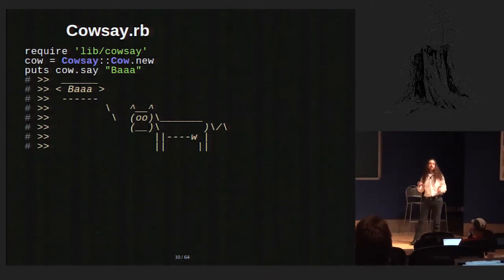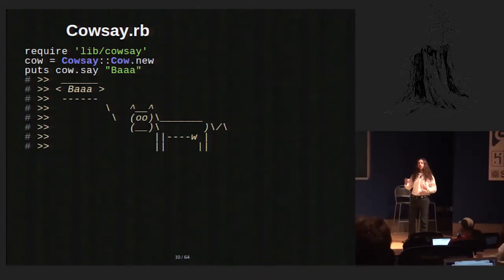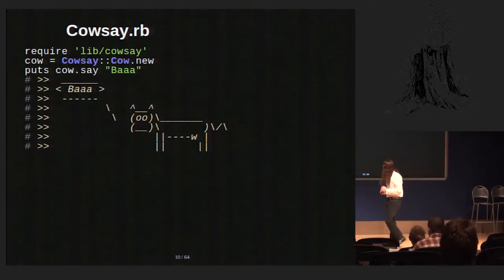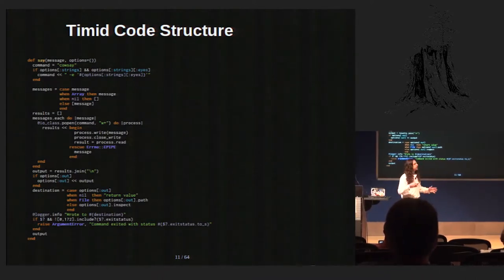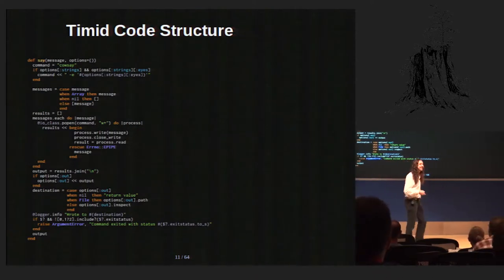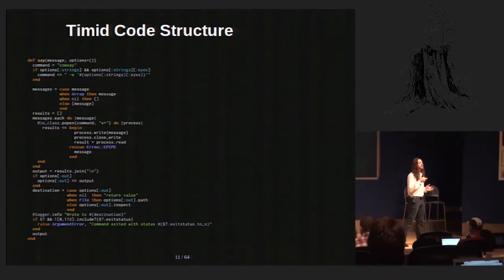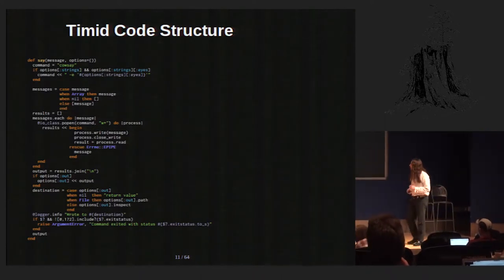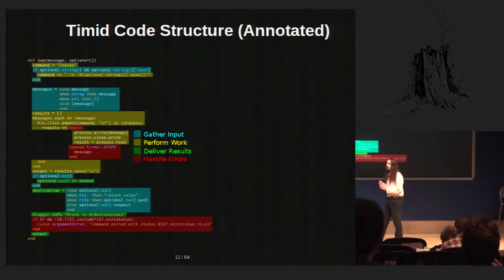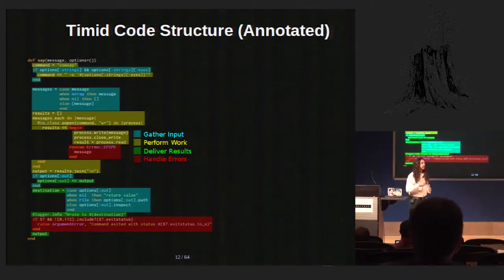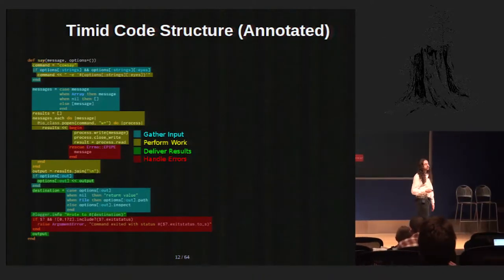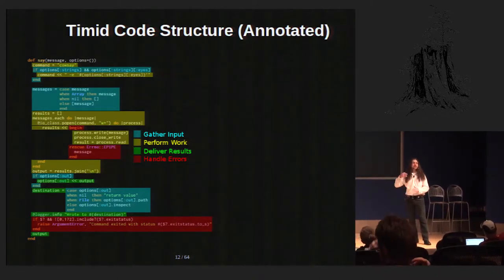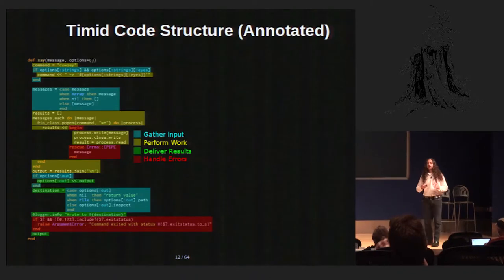Here's a basic example of how cowsay.rb works. It's just a thin wrapper where you instantiate a cow object and call say with what you want the cow to say. This is the main top-level say method. What I want you to look at is not what the code says, but the structure and flow of the code. I've marked it up in terms of four parts of a method: input gathering, business logic, error handling, and delivering results. What you can see is that it's all jumbled together. There is no real flow to this.